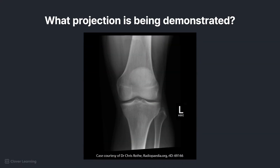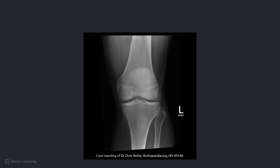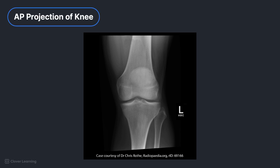Take a look at this radiograph. What projection is being demonstrated? How do you know? Let's find out the answers to these questions. If you said this radiograph is an AP projection of the knee, you're correct.